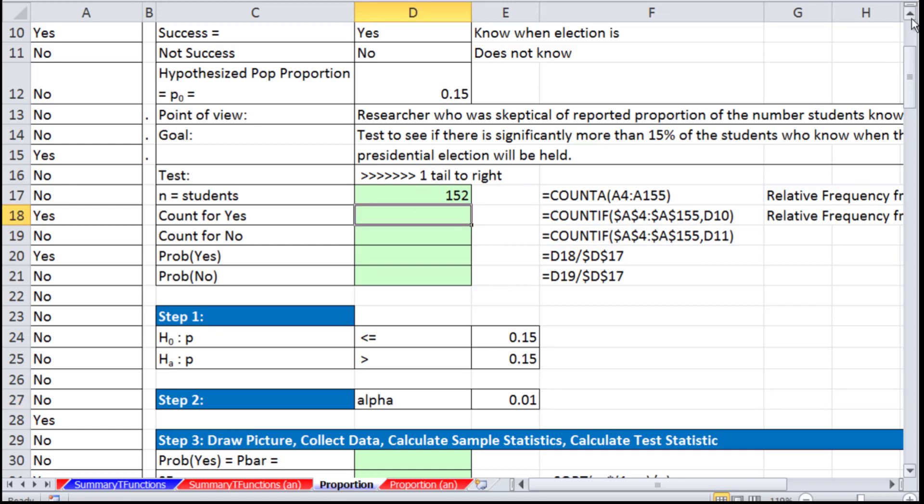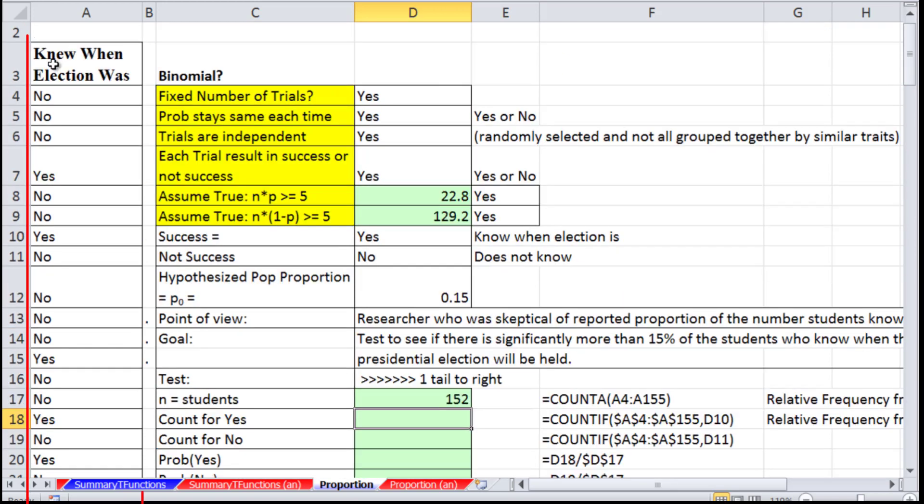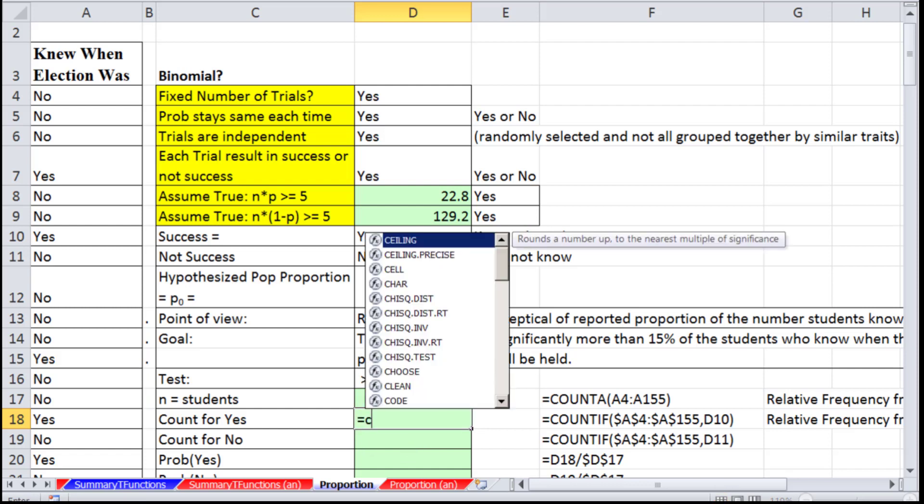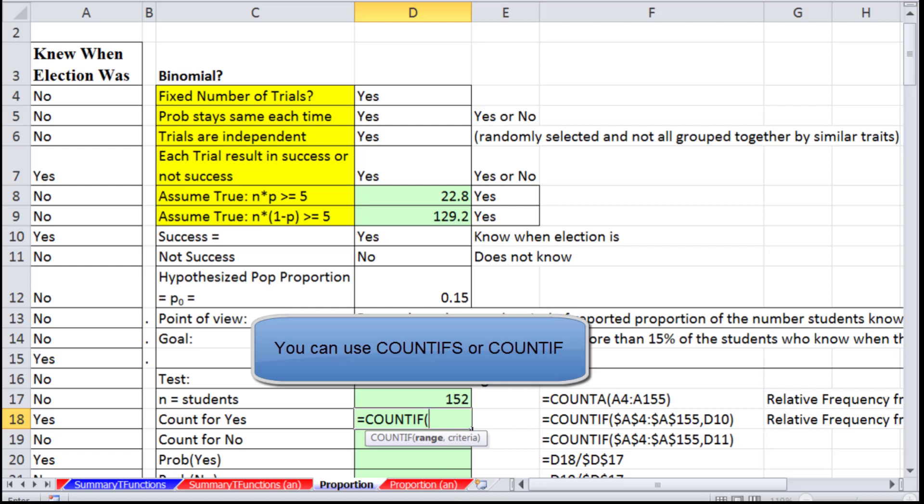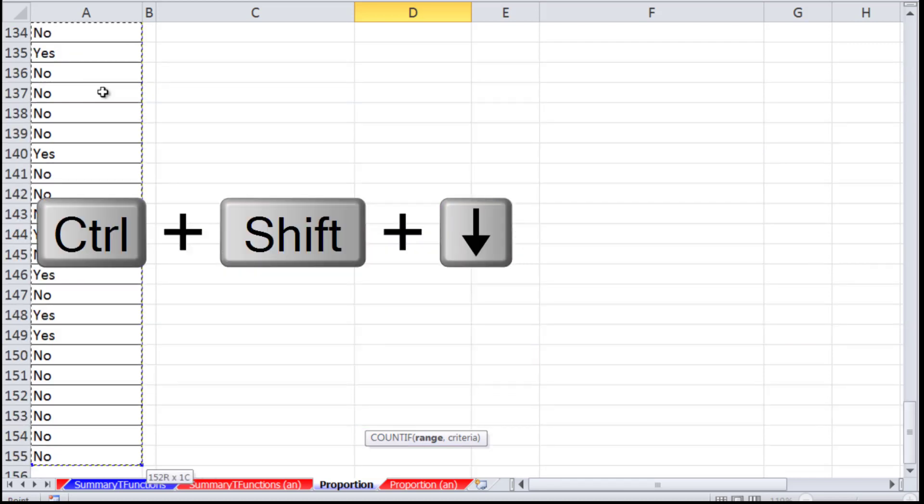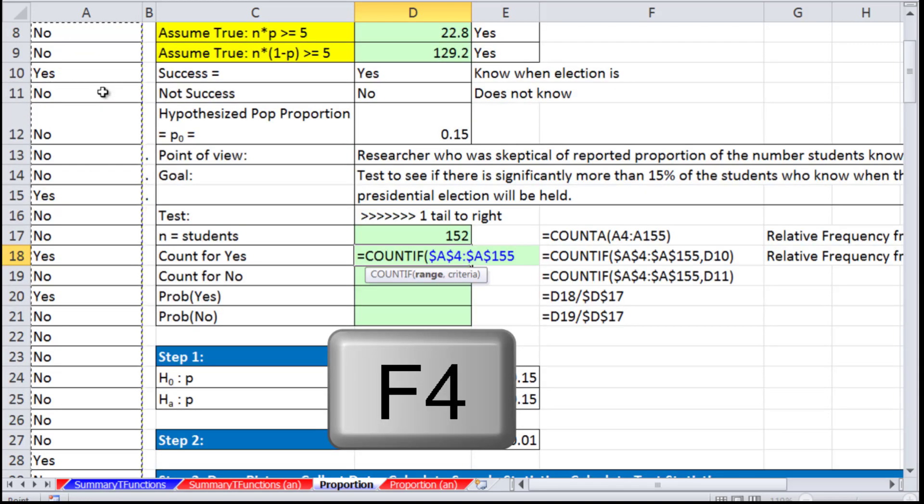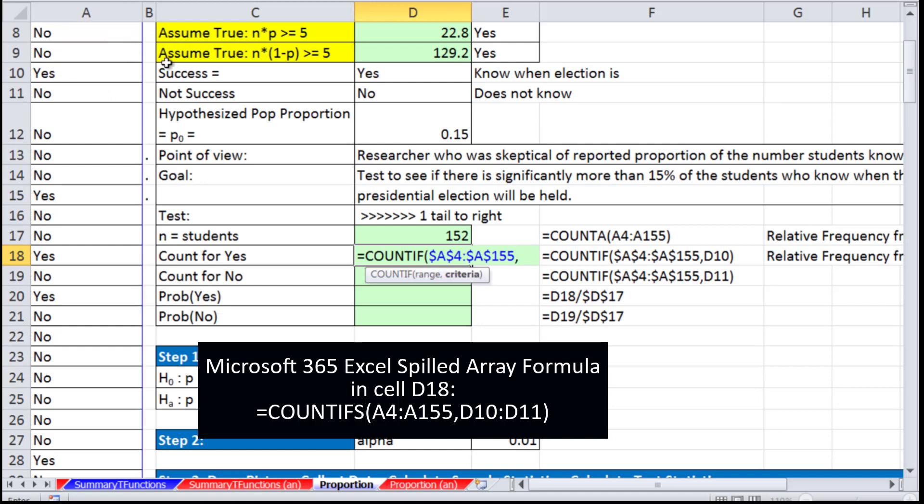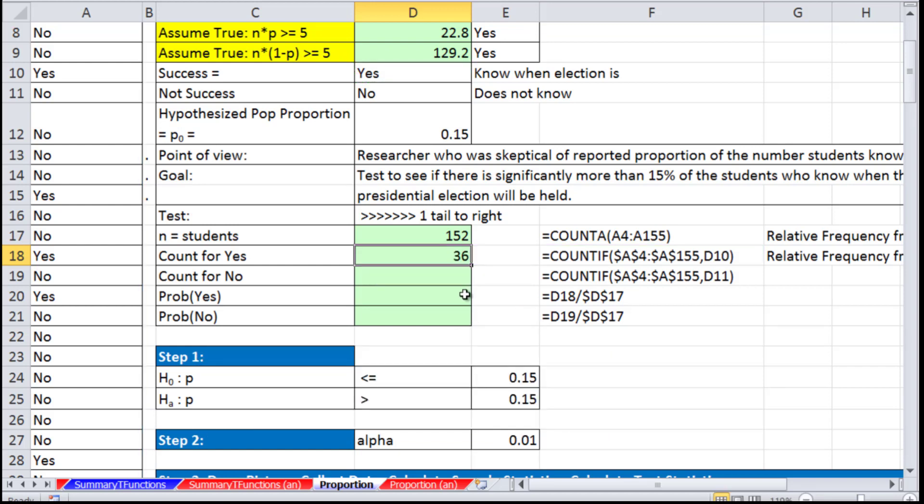Now we need to make calculations from our sample. We have a sample, yes or no, knew when the election was. I'm going to count the yeses and noes using the function COUNTIF. The range—click in that top cell, Control-Shift-Down Arrow and F4 to lock it. I've set up my criteria yes and no. Click there as a relative cell reference, Control-Enter, and when I copy it down we have 36 and 116.